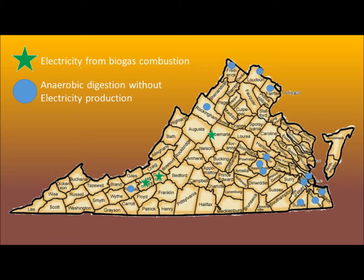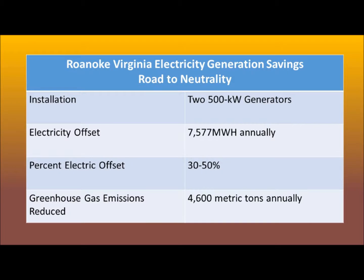Those three plants are Waynesboro, Christiansburg, and Roanoke. Using Roanoke as a case study, the 500 kilowatt generators offset nearly 50% of the treatment plant's bought electricity. The combined heat and power system greatly reduced greenhouse gas emissions at 4,600 metric tons annually.